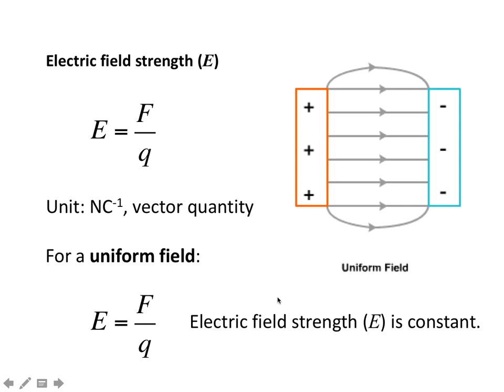For parallel plates, it's a little bit more complicated to calculate what the value is, so we just basically use it as the definition for a uniform field. It will be the same everywhere in the field. So it doesn't matter where you are in that field. F, to turn this around, will equal E Q. So E is constant everywhere inside the field.